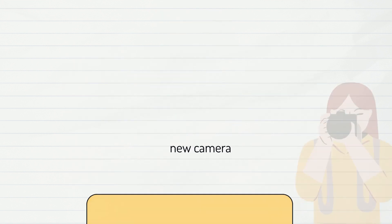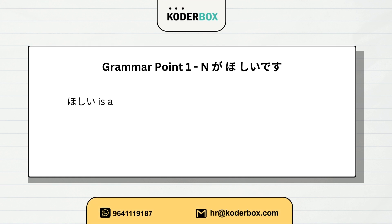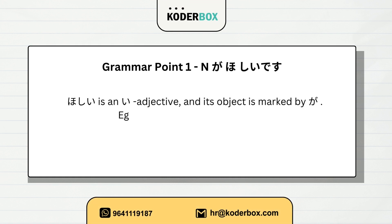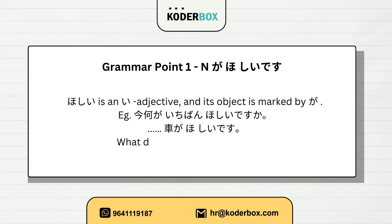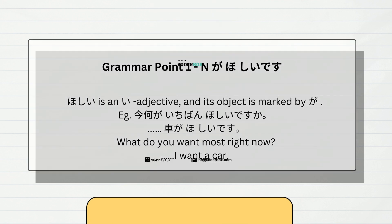Grammar point one: noun ga hoshii desu. Hoshii is an i-adjective and its object is marked by ga. Example: Ima nani ga ichiban hoshii desu ka? — Kuruma ga hoshii desu. What do you want most right now? I want a car.